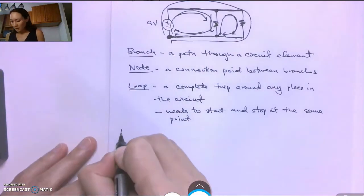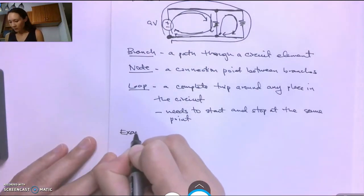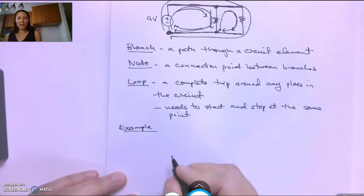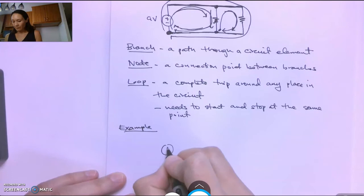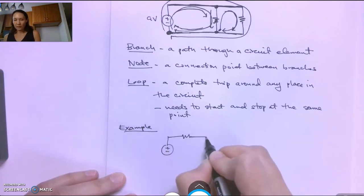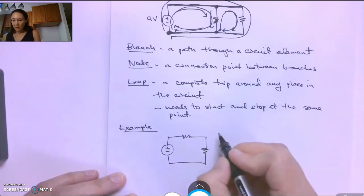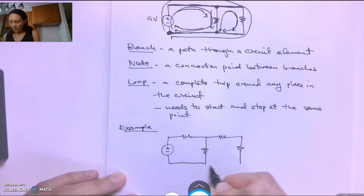So let's talk about this in terms of an example. Suppose we have a voltage source. Maybe we have a resistor here. We have a resistor down here. And we have another resistor here. We have another resistor here.